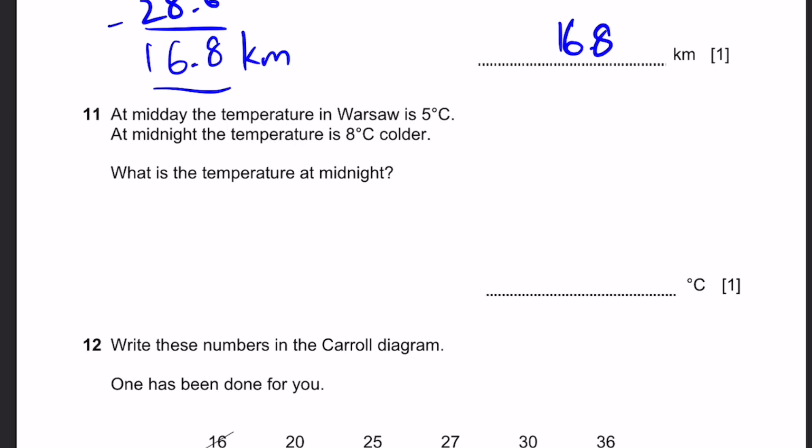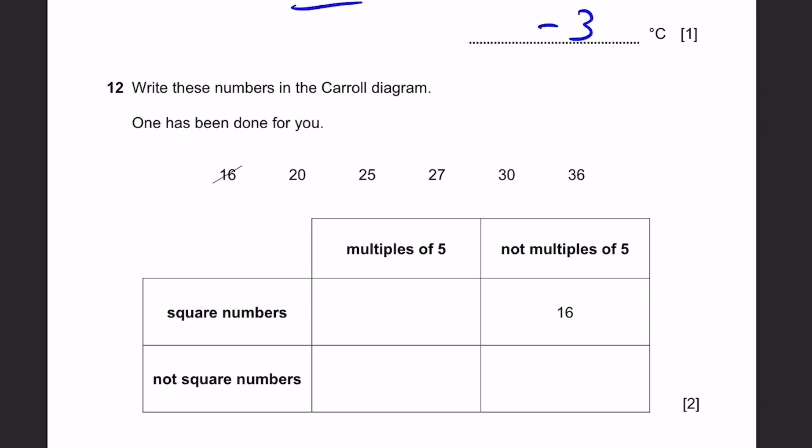Question 11. At midday, the temperature in Warsaw is 5 degrees Celsius. At midnight, the temperature is 8 degrees Celsius colder. What's the temperature at midnight? That's just subtraction: 5 minus 8, which is equal to minus 3 degrees Celsius. Question 12. Write these numbers in the Venn diagram. 20 is a multiple of 5 but not a square number. 25 is a multiple of 5 and a square number because 5 squared equals 25. 27 is not a square number and not a multiple of 5. 30 is not a square number but is a multiple of 5. And 36 is not a multiple of 5 but is a square number.